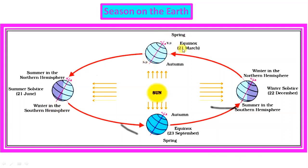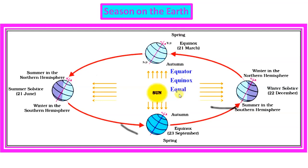Now, about 21st March and 23rd September. On these dates, the earth is not tilted toward or away from the sun, so sun rays fall directly on the equator. The North Pole and South Pole are neither inclined toward the sun nor away from it, so day and night are of equal duration. This is known as equinox.